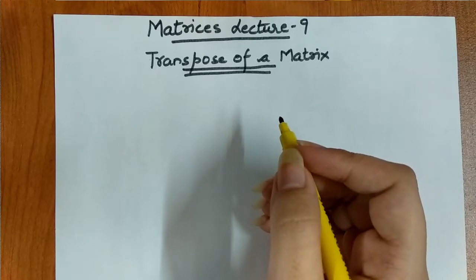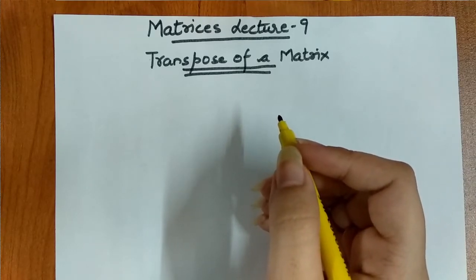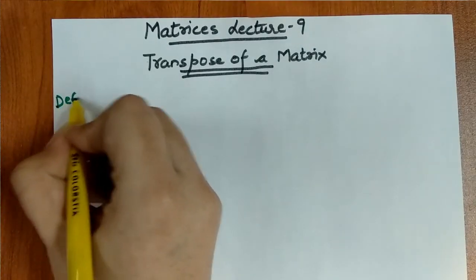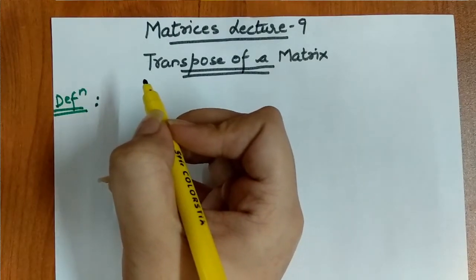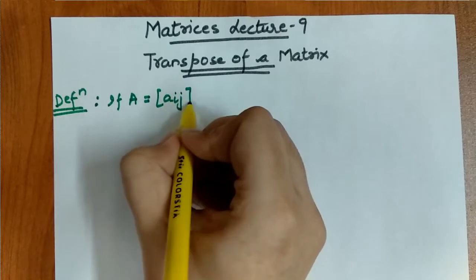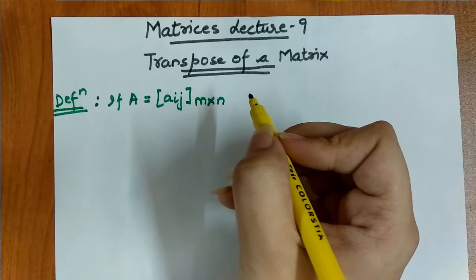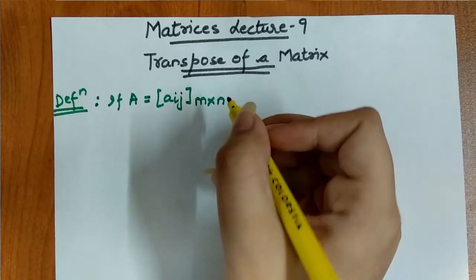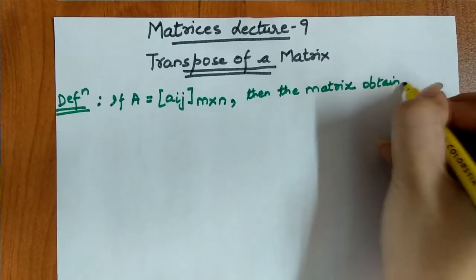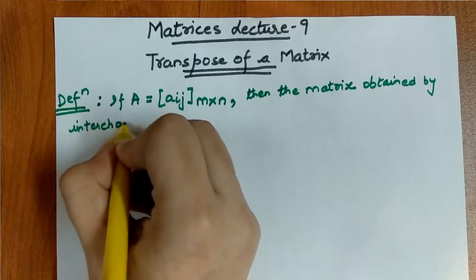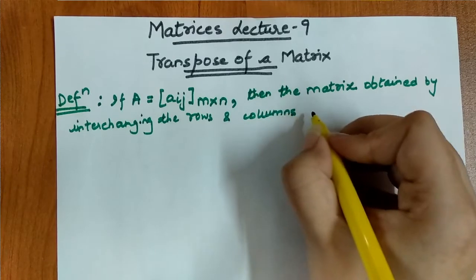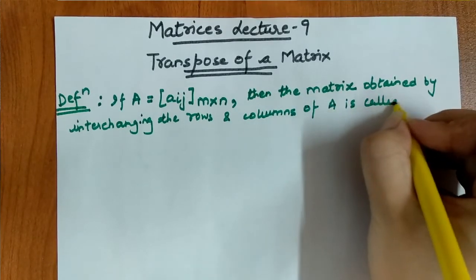Hello everyone, welcome back to my channel. In this video we will be covering the topic transpose of a matrix. The definition of transpose matrix states that if we have a matrix A having elements a_ij and order m cross n, then the matrix obtained by interchanging the rows and columns of A is called the transpose of A.